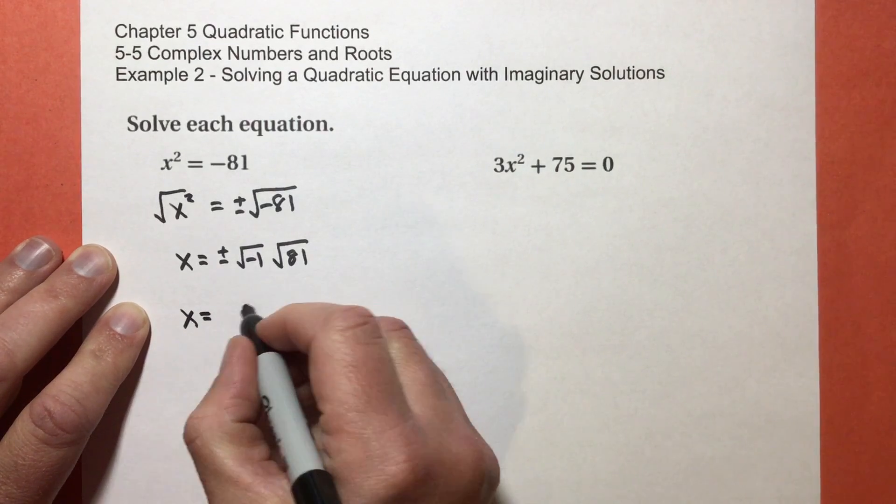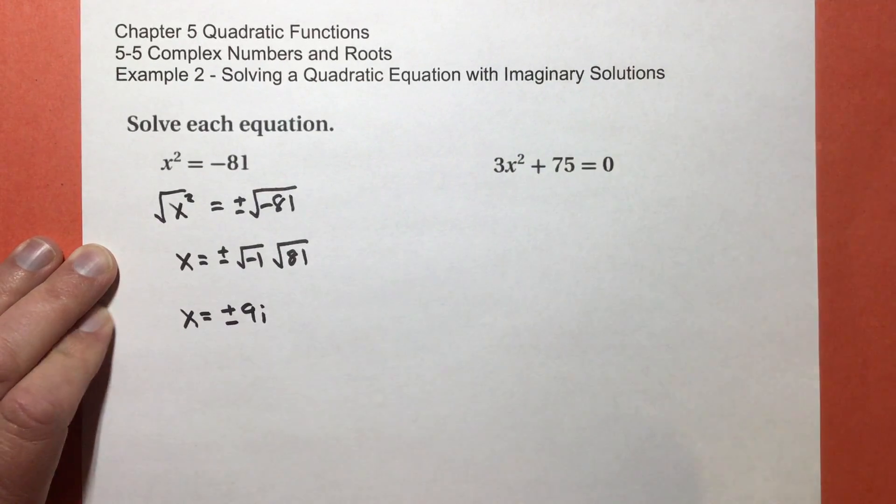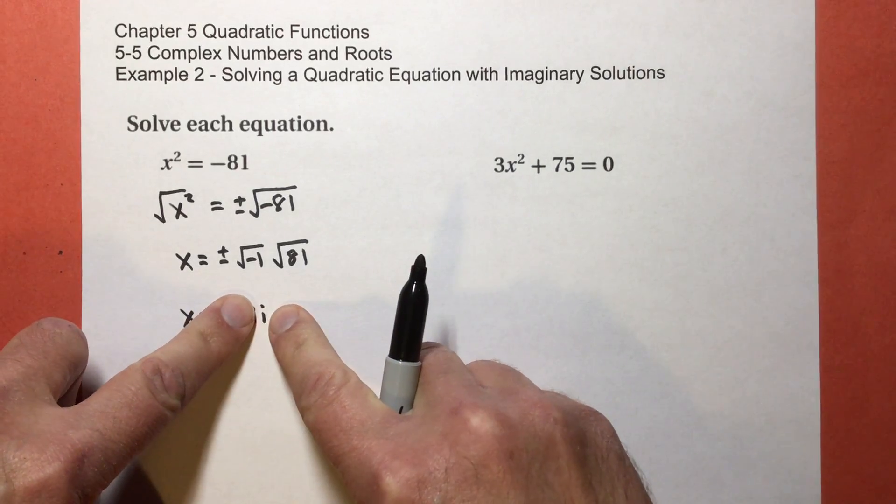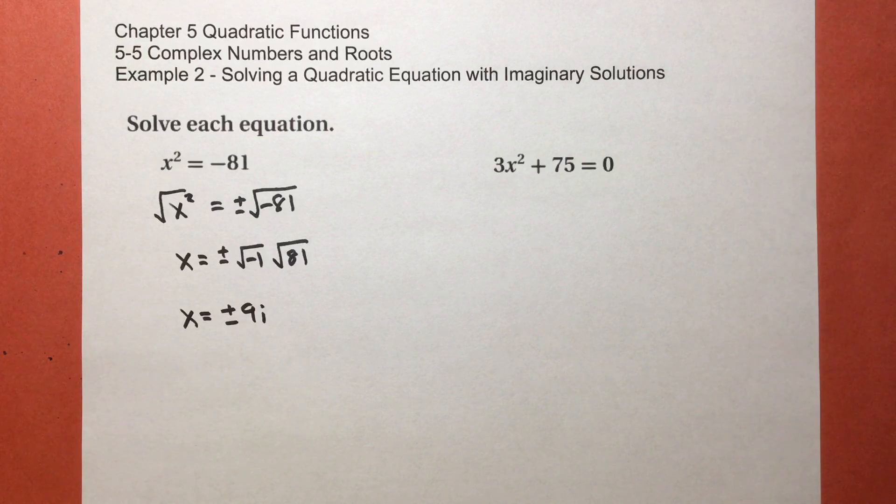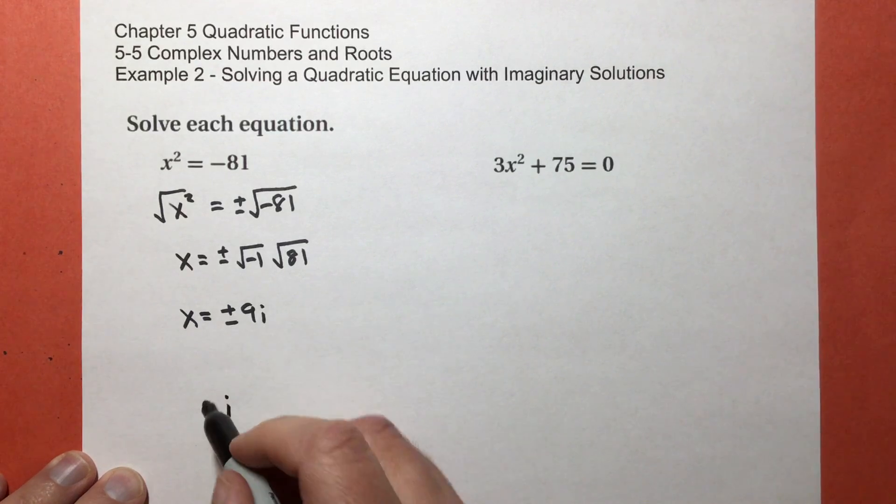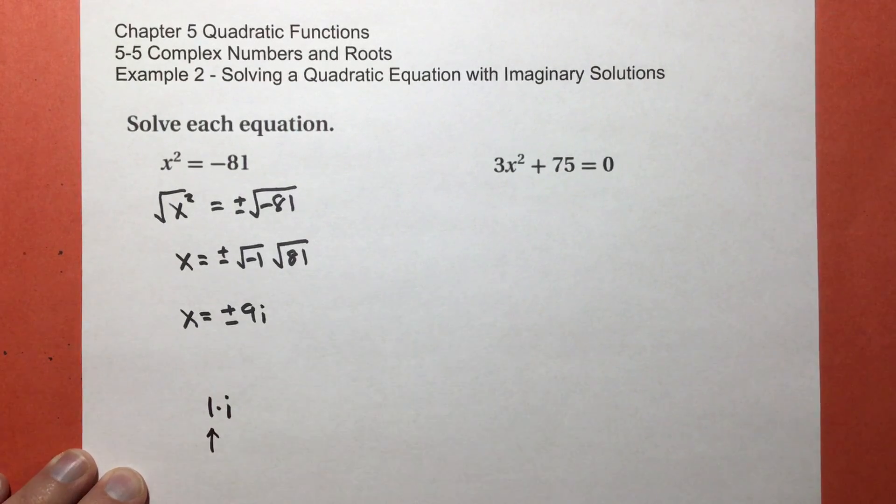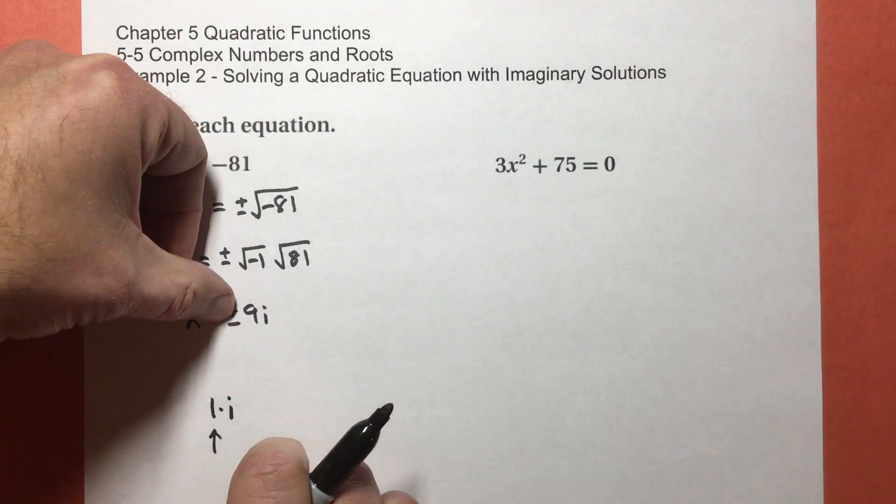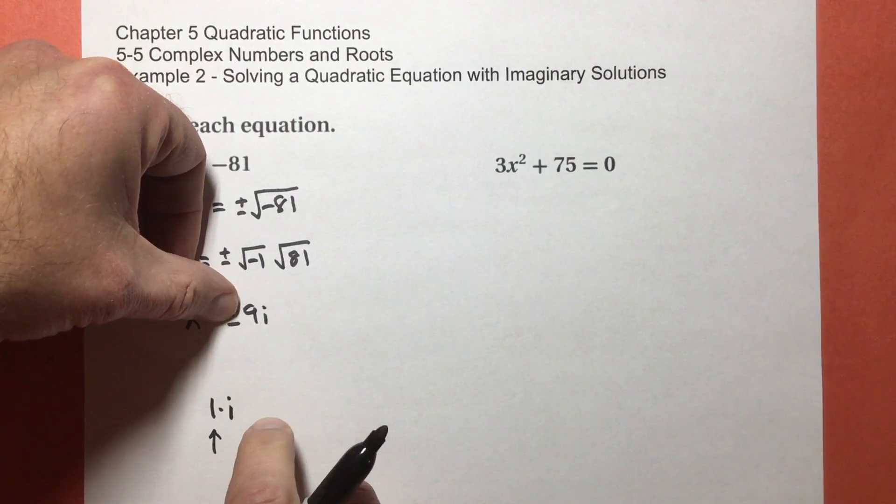So my solutions are +9i and -9i. Now you're probably thinking, but isn't i negative? No. i, which is the square root of -1, is not positive or negative. And I know that's mind-blowing. If I just have i, then you can think of that as being a positive number because it's actually 1 times i. Whether it's positive or negative comes from the coefficient. So my two answers are positive 9i and negative 9i.